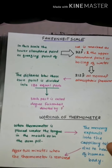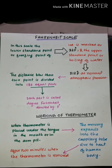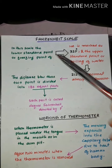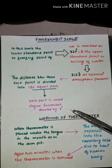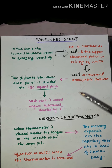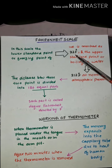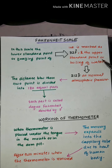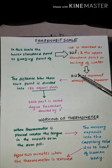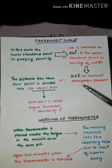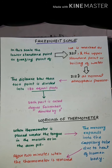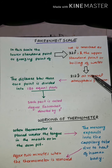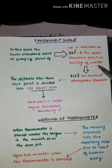Now the next type of scale is called the Fahrenheit scale. In this scale, the lower standard point, or the freezing point of ice, is marked as 32 Fahrenheit degrees. The upper standard point, or the boiling point of water, is marked as 212 Fahrenheit degrees at normal atmospheric pressure.